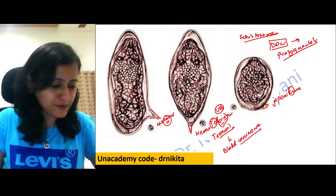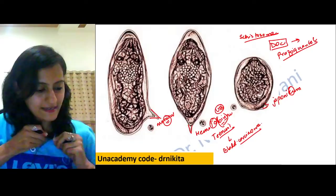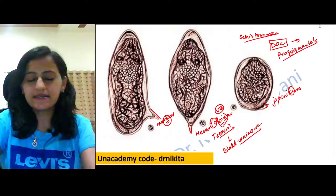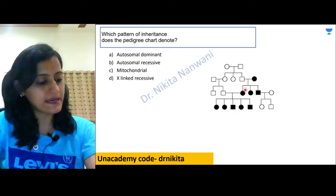Let's continue with the discussion. We were discussing Schistosoma — let's move to the next image. Tell me what type of inheritance pattern you see from this pedigree chart.